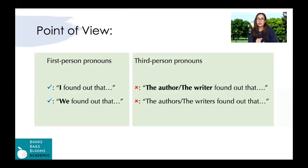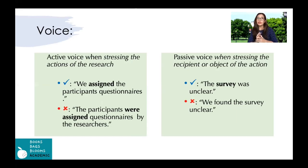APA suggests the use of first-person pronouns. So instead of using 'the author' or 'the writer' — as you've seen in a lot of papers you've read — APA suggests using first-person pronouns. Regarding voice, APA suggests both active voice and passive voice, depending on where you use them.